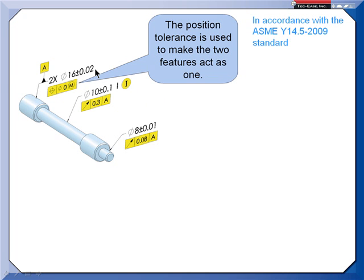In the 2009 revision, this is allowed where we have features of size that will be used as a primary datum feature and need to be controlled with respect to each other. Using zero at maximum material condition, there is a boundary of perfect form - the virtual size - at 16.02.